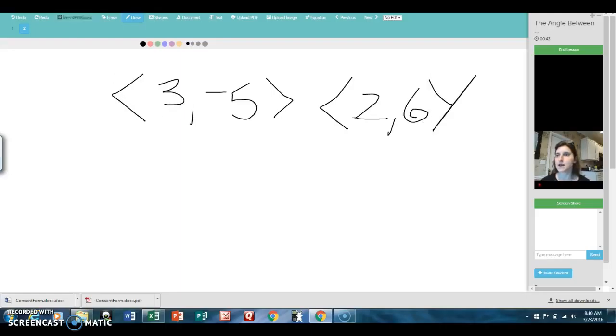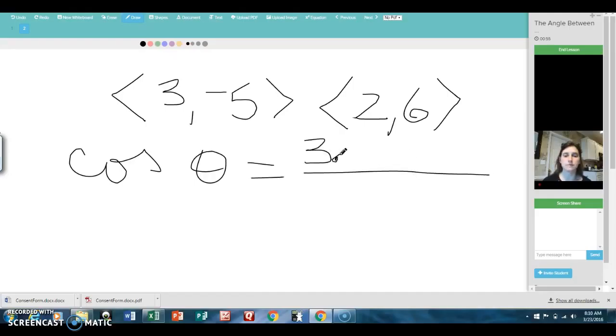So the cosine of the angle between those two vectors is equal to the dot product, so that'll be 3 times 2 plus negative 5 times 6, and then divided by the product of their magnitudes.